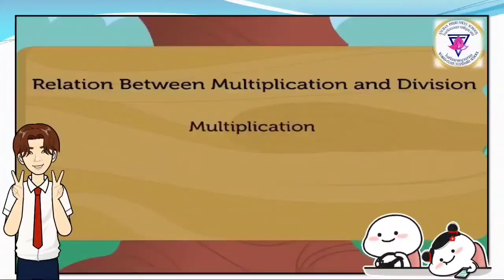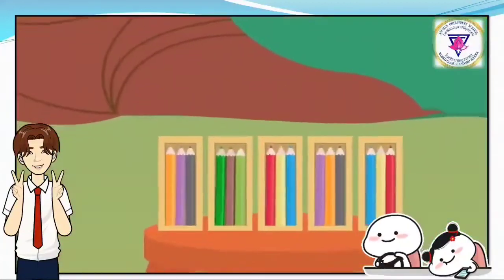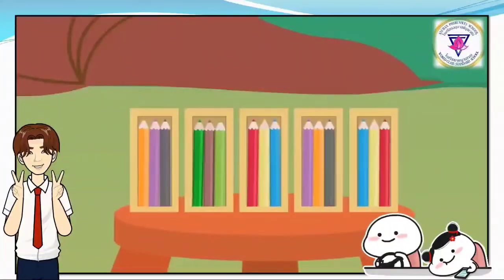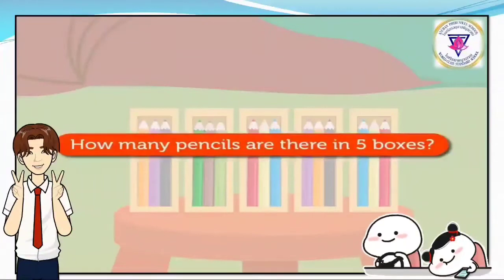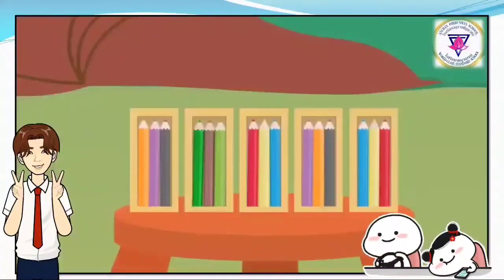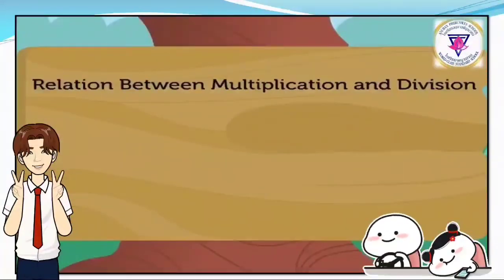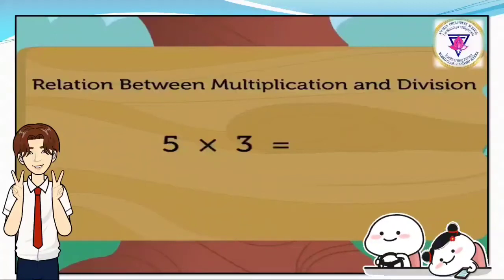Multiplication and division are very closely related. Let us see how. There are 5 boxes and each box has 3 pencils. How many pencils are there in 5 boxes? To get the product, we multiply 5 and 3. 5 times 3 is equal to 15.